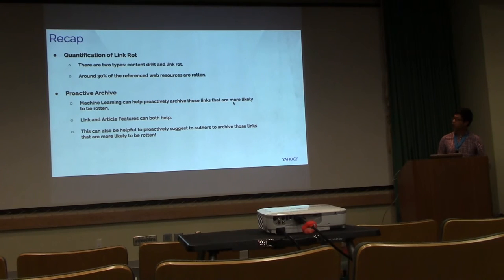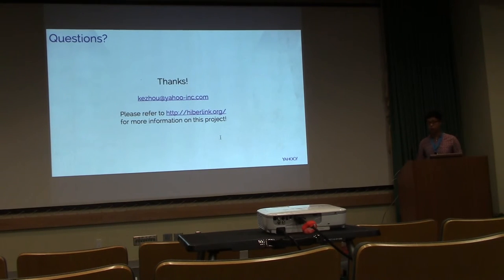So just to recap, in this work we quantified predominantly the link rot problem. There are two types, the content drift and the link rot. Around 30% of the reference web resources are completely rotten, not available online and not archived. That's why we want to develop a link rot predictor in order for the archival solution to proactively archive those links that are more likely to rot. We show that both link and article-based features could help, and it's preliminary. If you want to know more information, you can check the website on the hyperlink project. Thank you.